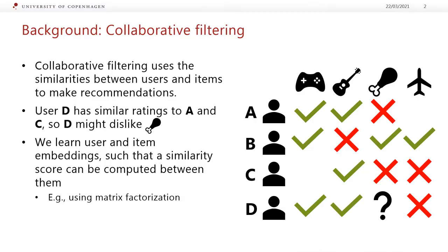In collaborative filtering, we use the similarities between users and items to make recommendations. For example, if we consider user D and compare this user to user A and C, we see that D did have an overlap with these in provided ratings or likes and dislikes, and from this we might guess that D would also dislike the meat option. More generally, you would normally learn user and item embeddings such that a similarity score can be computed between them, which you can do using normal matrix factorization.